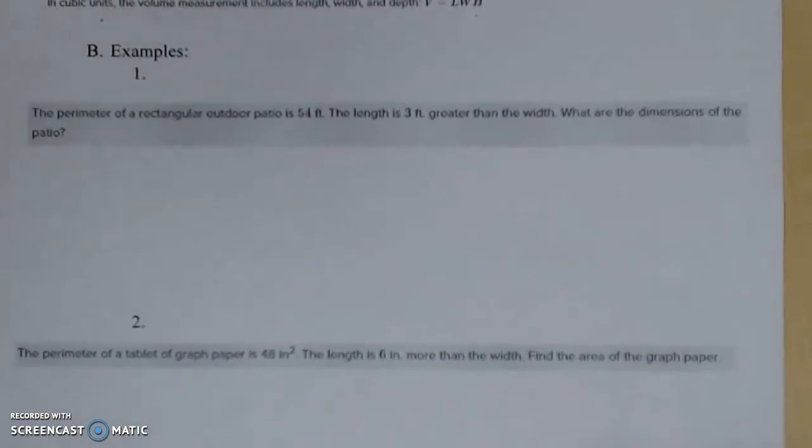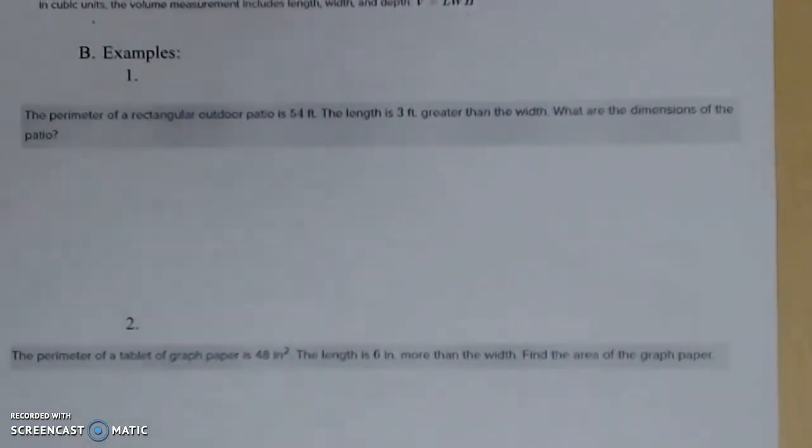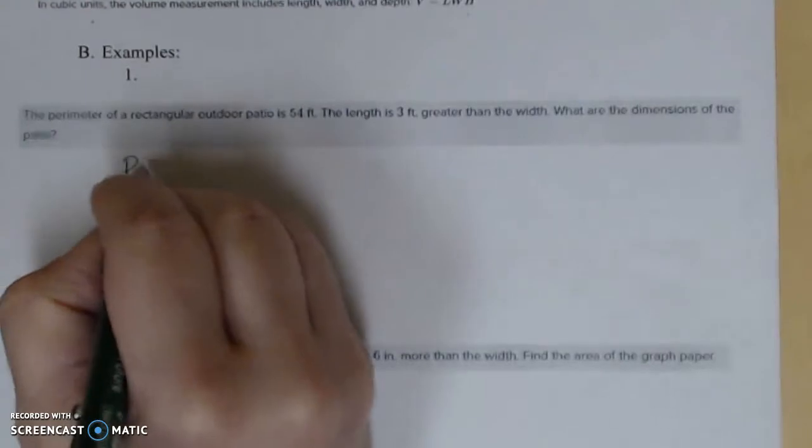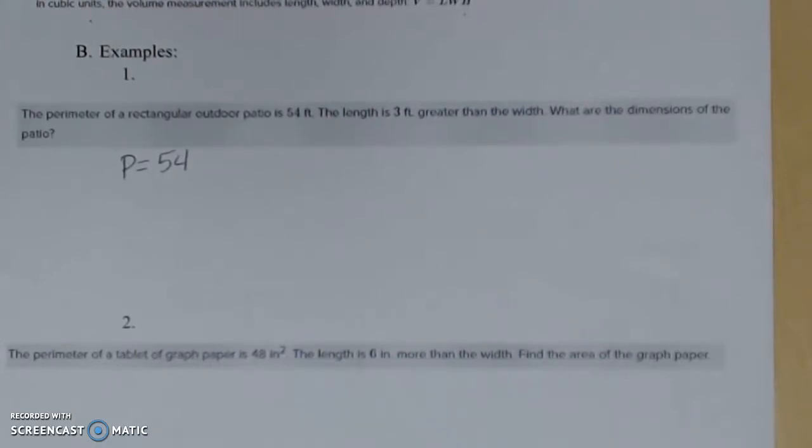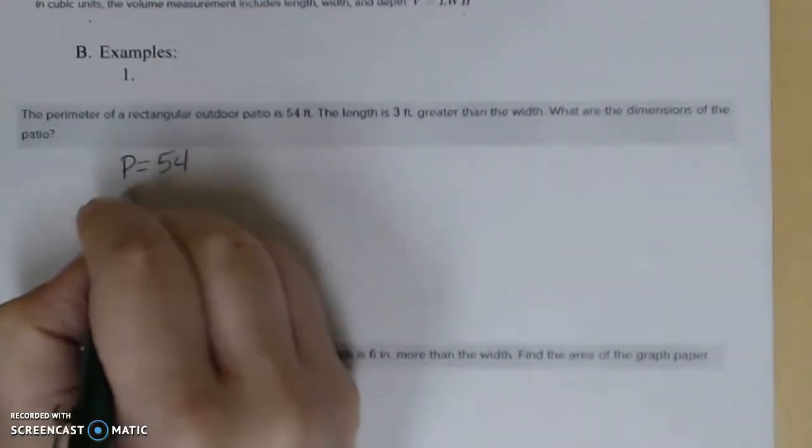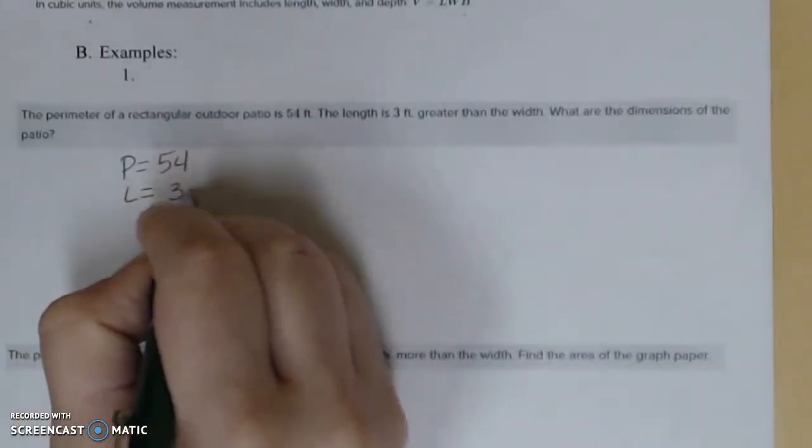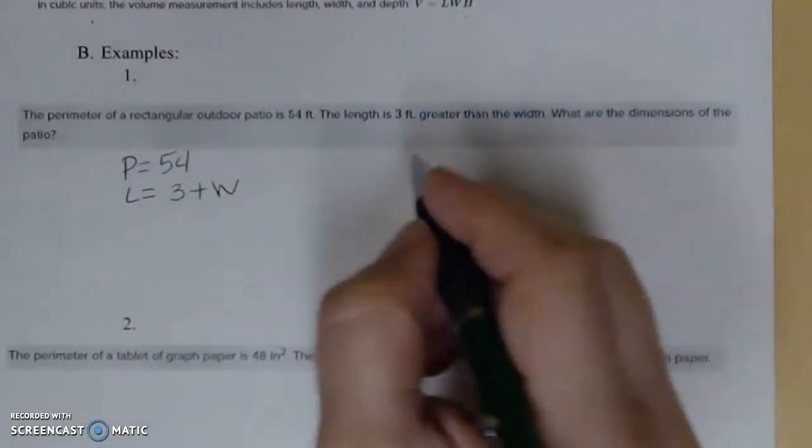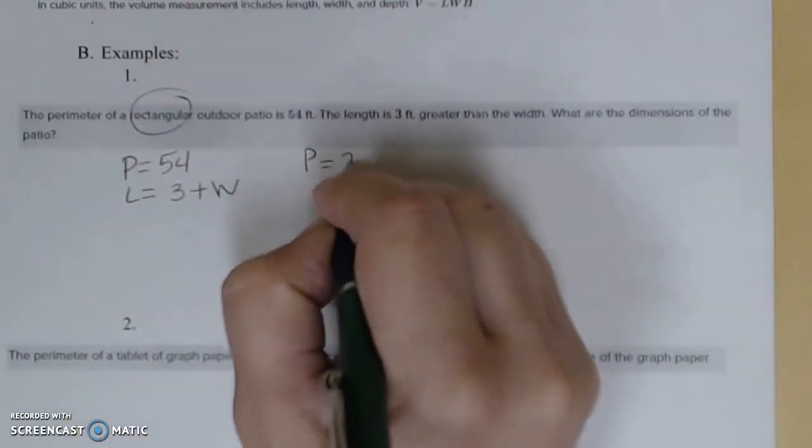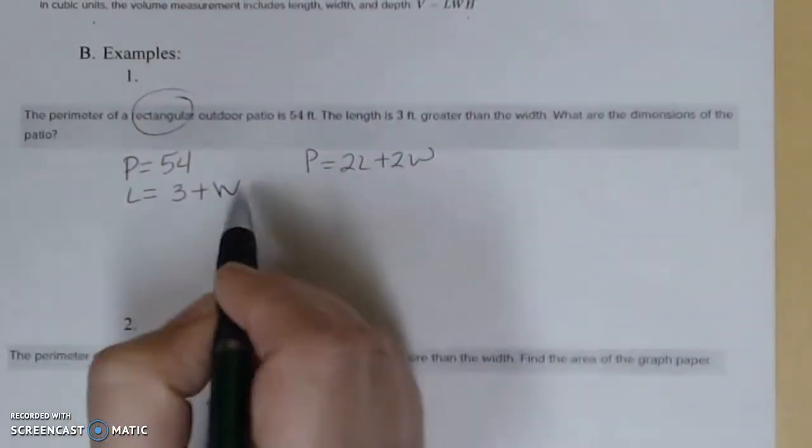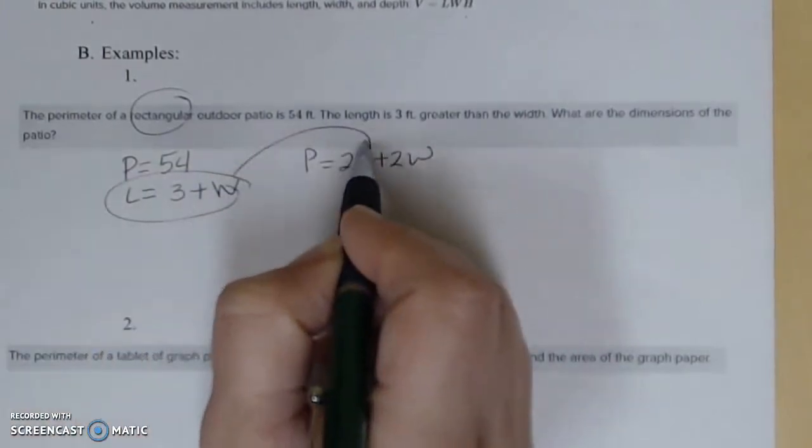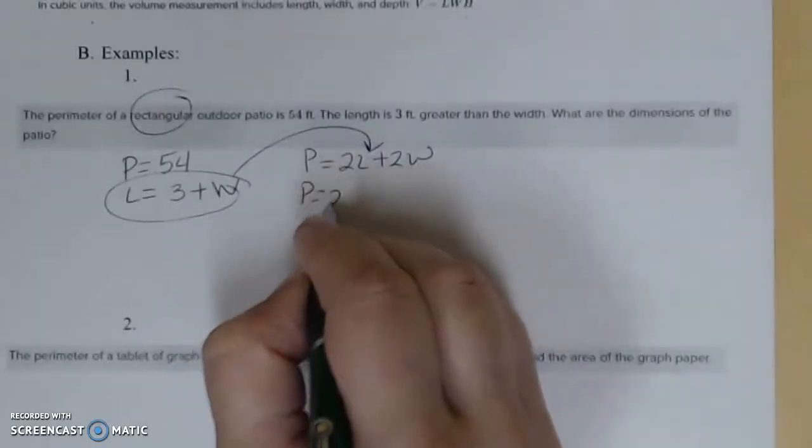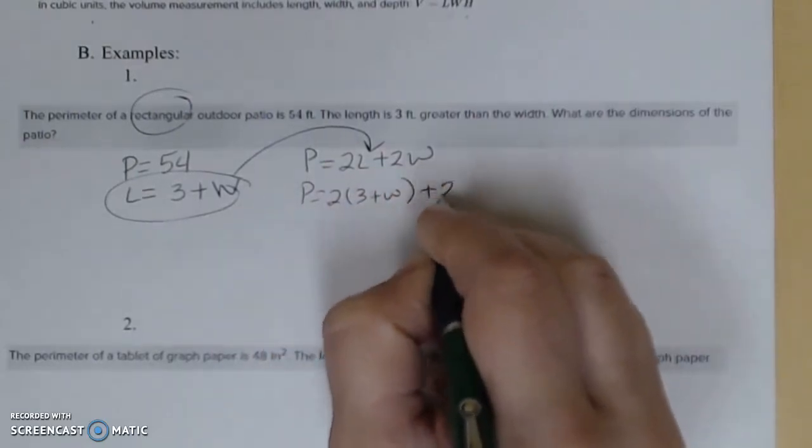Let's do these two examples. Example one, the perimeter of a rectangular outdoor patio is 54. So I'm going to take the math out of that. Perimeter is equal to 54. Then it says the length is three feet greater than the width. So my length is three feet greater than the width. What are the dimensions of the patio? Well, it is rectangular. So that would be twice the length plus twice the width. I know length is equal to three plus W. So I'm going to plug it in here.